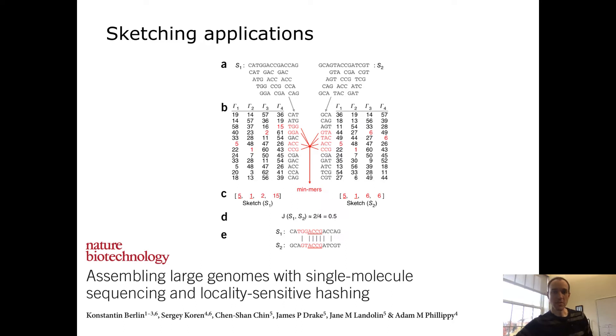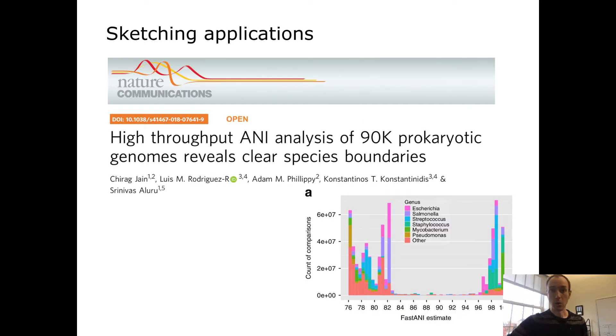This has been used in different areas in genomics. One is the MHAP algorithm, which uses something like a MinHash sketch to find pairs of sequencing reads that might be glued together in a genome assembly. Another is FastANI, which uses sketching to estimate the average nucleotide identity between two sequencing datasets. These are just two of many examples.